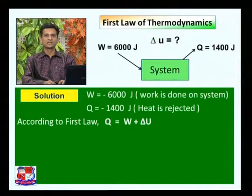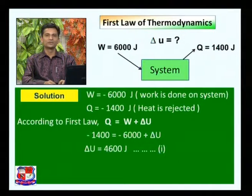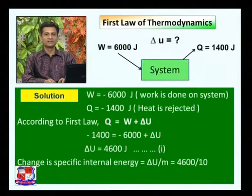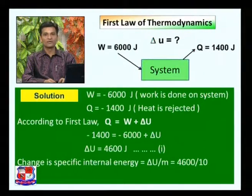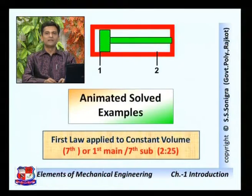According to the first law, Q = W + ΔU. Substituting values: Q = -1400 J and W = -6000 J, so ΔU equals 4600 J or 4.6 kJ. To find the change in specific internal energy, we divide by mass: 4600 J divided by 10 kg equals 460 J/kg. That is the answer to this problem.